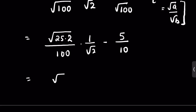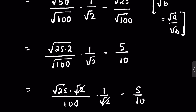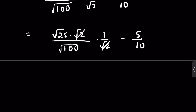This becomes square root of 25 times square root of 2 upon 100, times 1 upon square root of 2, minus 5 upon 10. The square root of 2 cancels out. Square root of 25 is 5, square root of 100 is 10, so we get 5 upon 10 minus 5 upon 10, and the answer is 0.